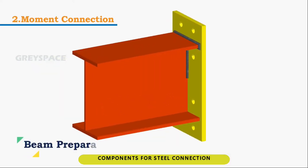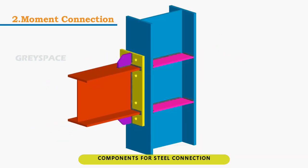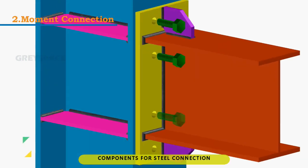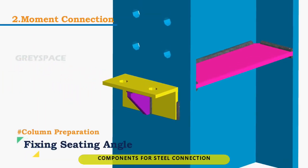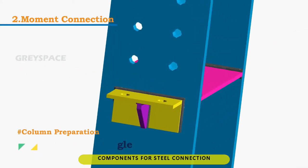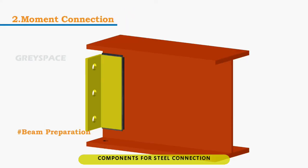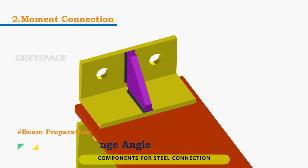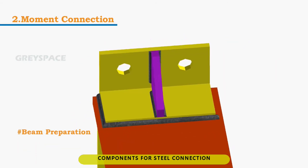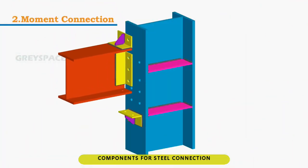11. End plate: a rectangular steel plate welded at the end of a steel beam, then bolted to the surface of the receiving column, used on a semi-rigid connection. 12. Seat angle: a small angle bar that is bolted or welded on the bottom flange of a beam that it carries, and attached to the surface of the receiving column, used on a seated connection. 13. Stabilizing angle: a small angle bar that is bolted or welded on the top flange of a beam that needs to be fixed in place, and attached to the surface of the receiving column, used on a seated connection.